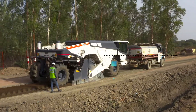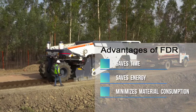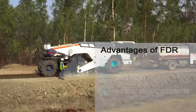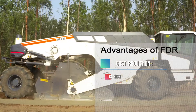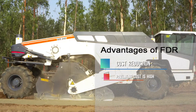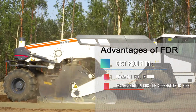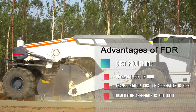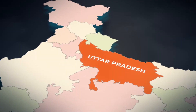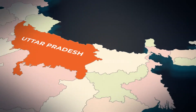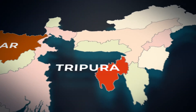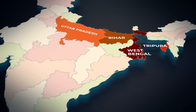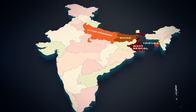Overall, FDR has great advantages in terms of saving time and energy, minimizing material consumption, and cost reduction — especially where pavement cost is high, transportation cost of aggregates is high, and the quality of aggregate is not good. States like Uttar Pradesh, Bihar, Tripura, and West Bengal are already using FDR technology as a cost-effective construction methodology.